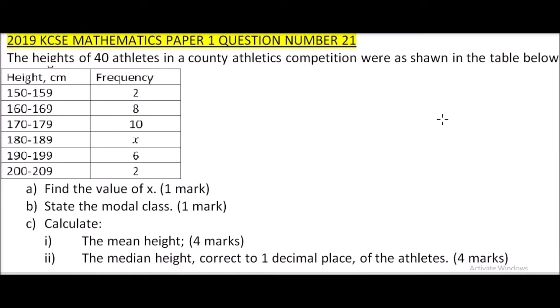For example, the first group is from 150 to 159. The frequency means the number of athletes in that category, that is their height is between 150 and 159. Then we have 160 to 169, there were eight, and on up to 200 to 209, there were two.